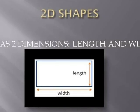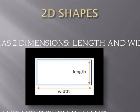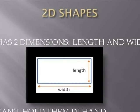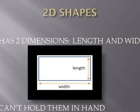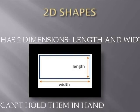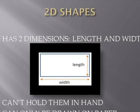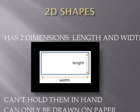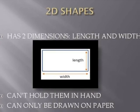2D shapes, as the name suggests, have two dimensions: length and width. We cannot hold these figures in our hands since they have two dimensions. We can only draw them on paper.